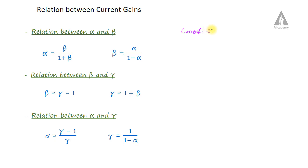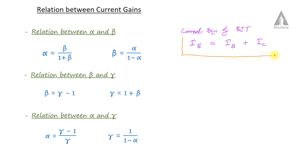So this is the current equation of BJT. We can write the current equation of BJT as IE is equal to IB plus IC.